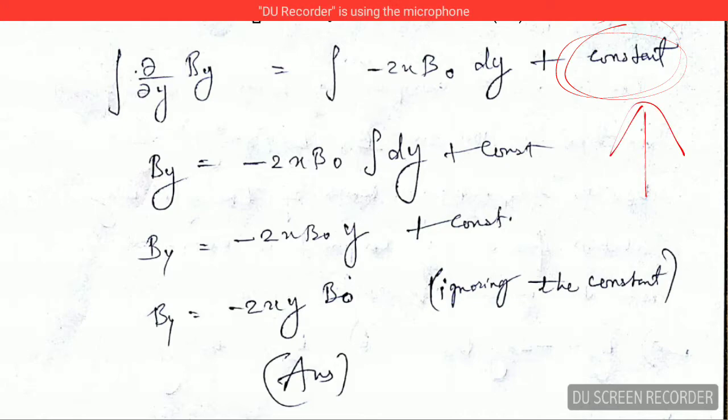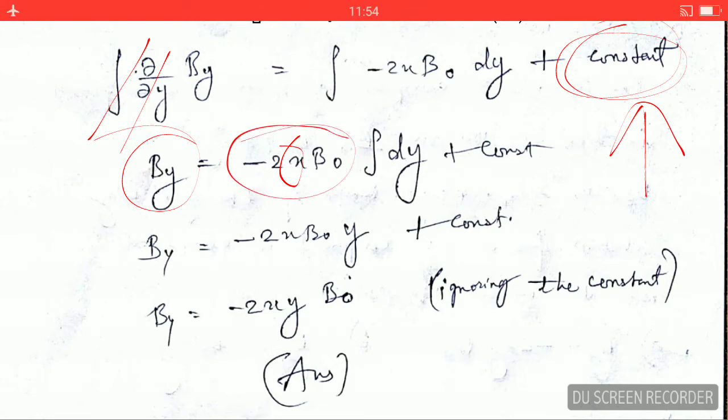Since we know that integration and differentiation both neutralize each other, so both will cancel out and we will only be left with By. But here at this point, since we are integrating with respect to y, x is an independent variable and this whole term can be taken out.